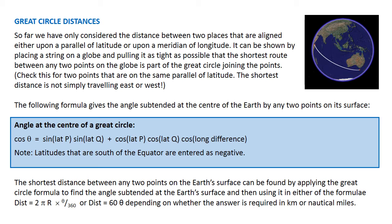So far, we have only considered the distance between two places that are aligned, either on a parallel of latitude or on a meridian of longitude. It can be shown that by placing a string on a globe and pulling it as tight as possible, the shortest route between any two points on the globe is part of the great circle joining the points.